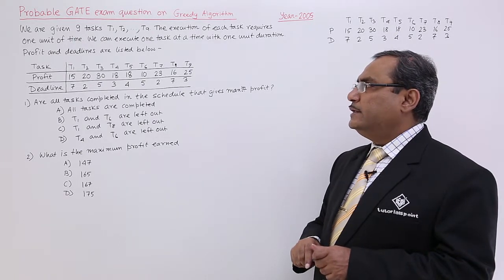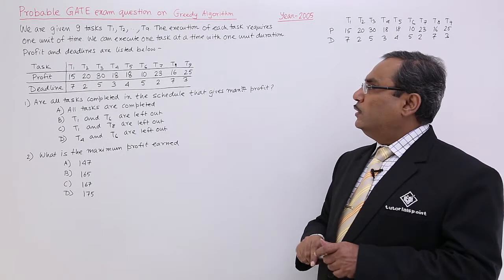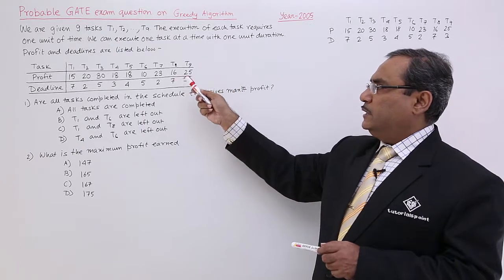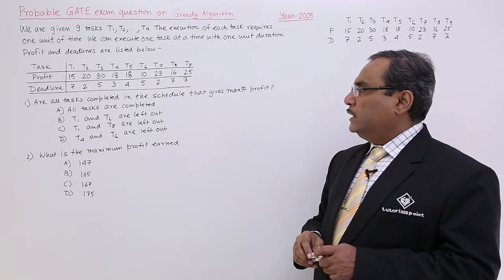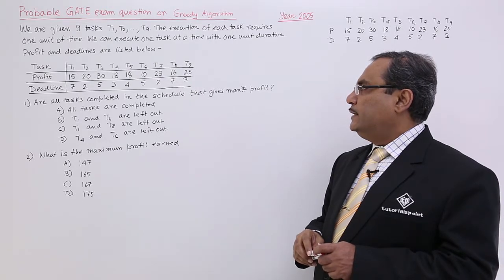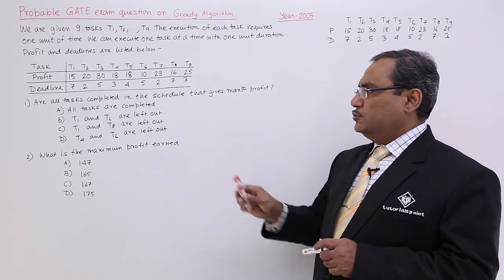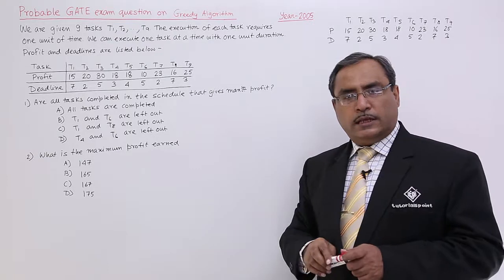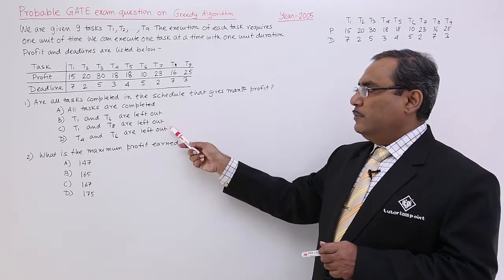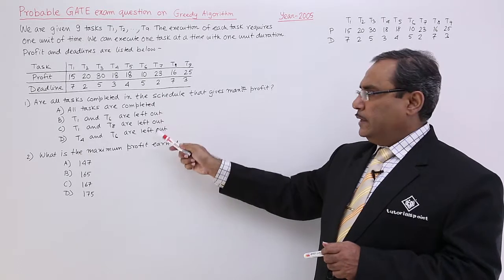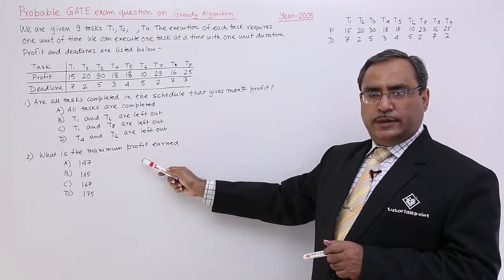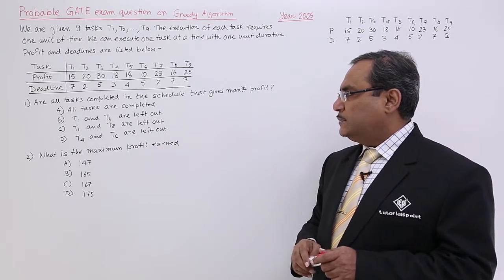Profit and deadlines are listed below. T1 to T9 have their respective profit values and deadlines given. Are all tasks completed in the schedule that gives maximum profit? Four options are there. They are asking whether any task will remain unfitted or all tasks will get completed. That is the first question. It has a second part: What is the maximum profit earned?